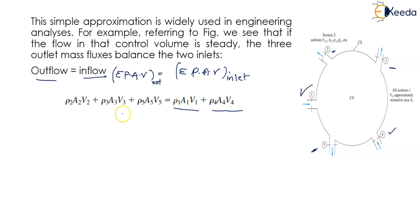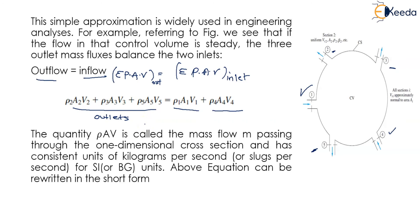The quantity ρAV is called the mass flow M passing through the one-dimensional cross section, and has units of kilograms per second in SI units. The above equation can be rewritten in the short form: M₂ plus M₃ plus M₅ is equal to M₁ plus M₄.